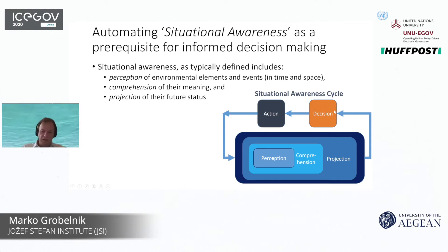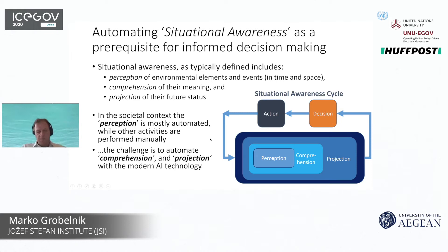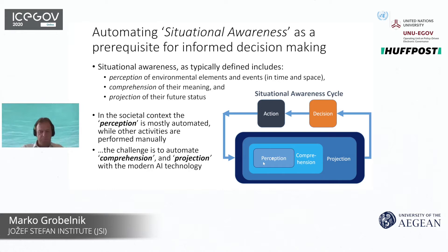This is a kind of cycle. Perception is usually automated these days, but comprehension and projection are mostly still manual — especially in governments. In other environments these are automated, but in governments comprehension and projection are mostly manual, and this causes a problem in terms of speed and quality of decision making. This is also a challenge for modern AI technology.